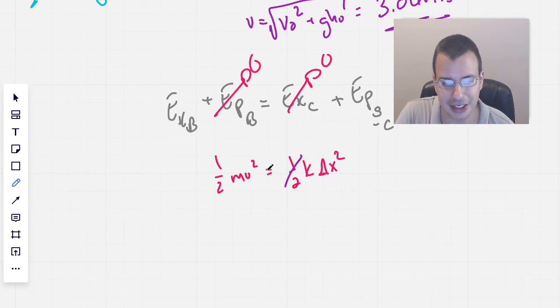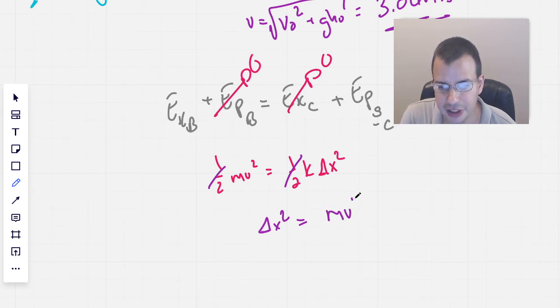And that's just the potential energy formula for the spring. Doing a little bit of canceling, we get delta x squared equals m v squared over k.